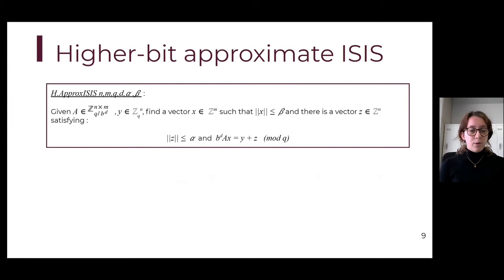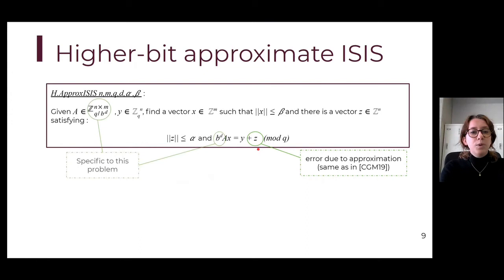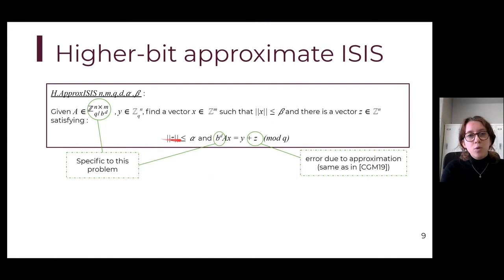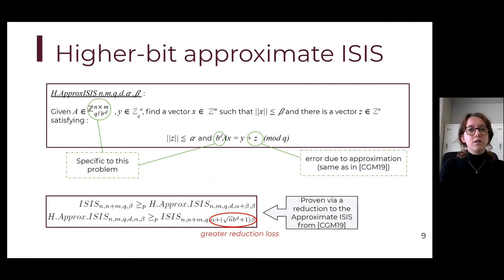To be able to do so, we had to define a new underlying problem which we named the higher-bit approximate ISIS. This problem is very similar to the approximate ISIS from the F-trapdoor construction — there is still an error due to the approximation, same as in the previous work. However, we add specificities: the given matrix A is now defined in a set with modulus q divided by b to the power d, while we work afterwards in modulus q. This is really the specificity of this newly defined problem. We show its reduction to the ISIS problem, but because of the bigger approximation and thus bigger error, we have a greater reduction loss.